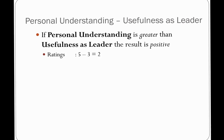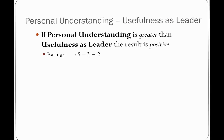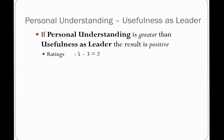Let's look through some examples. If a personal understanding rating is greater than usefulness as leader, then when I take the personal understanding rating and subtract the usefulness as leader, for example 5 minus 3, I'll get a positive result of 2. That's if the personal understanding is greater than usefulness as leader.